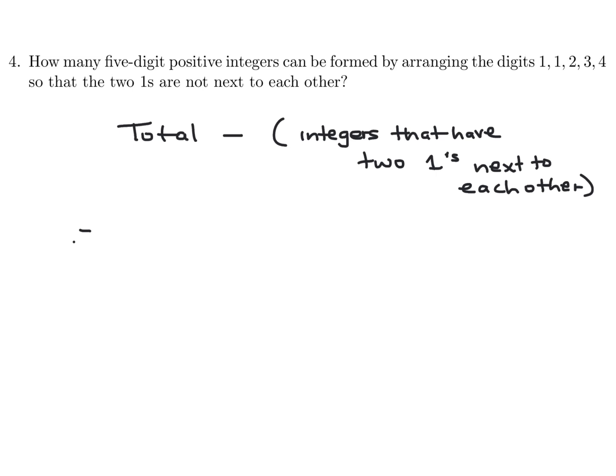Okay, so first let's figure out the total. Well, there's five numbers, right? So you have five choices here, four choices here, three choices here, two choices here, one choice here. But the problem is that two of the numbers are the same. So this double counts. So you'd have to divide by 2. So that would be 5 factorial divided by 2 is the total.